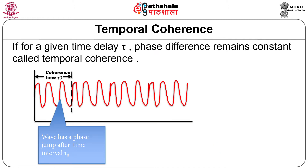Consider the electric field of the electromagnetic wave at a given point P at time t and t plus tau. If for a given time delay tau the phase difference remains constant, we say there is temporal coherence over the time tau. If this occurs for any value of tau, then the wave has perfect temporal coherence. If this occurs for a time delay between 0 to tau-0, then the wave has partial temporal coherence with coherent time tau-0. The figure shows that the wave has a phase jump after time interval tau-0.